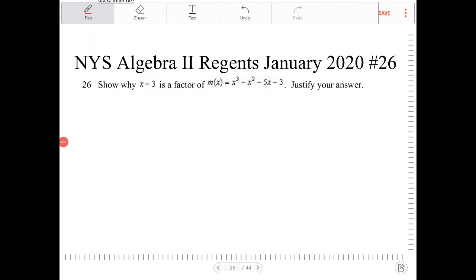Show why x minus 3 is a factor of m of x equals x to the third minus x squared minus 5x minus 3. Justify your answer.